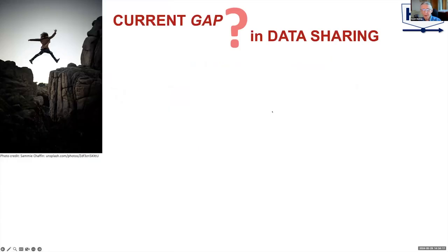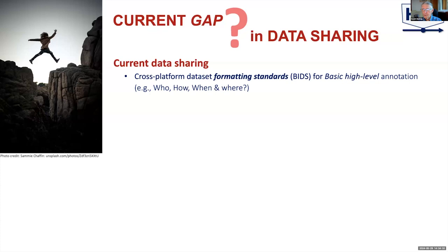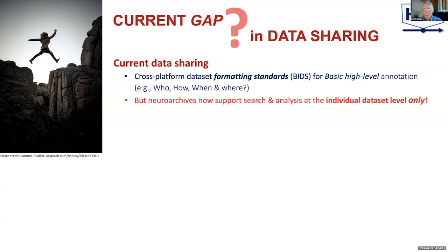As Kay noted — this was Kay's idea, this nice picture — there is definitely a gap in data sharing of time series neuroimaging data. In the BIDS standards, there is basic metadata that is mandated with some loopholes. It tells you who, how, when, and where the data were recorded. But there is no standard for recording details of participant experience or behavior — in other words, what happened.